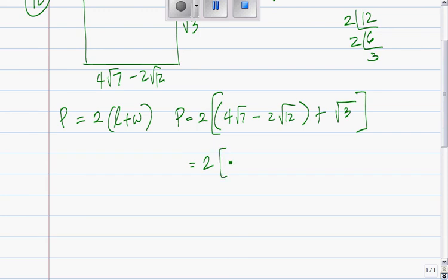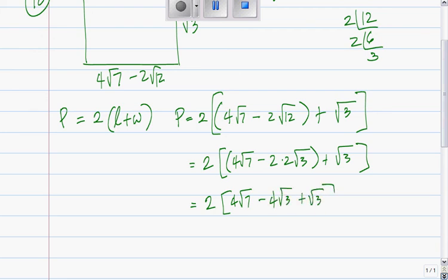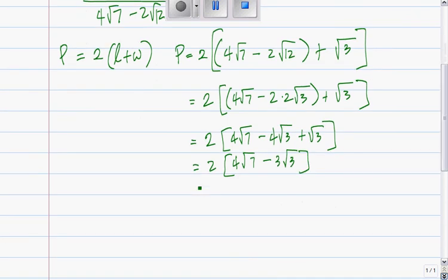So you have now 2 times (4√7 - 2 times 2√3 + √3). We're doing this step by step. This becomes 2(4√7 - 4√3 + √3), which becomes 2(4√7 - 3√3). Multiply that by 2: 8√7 - 6√3.